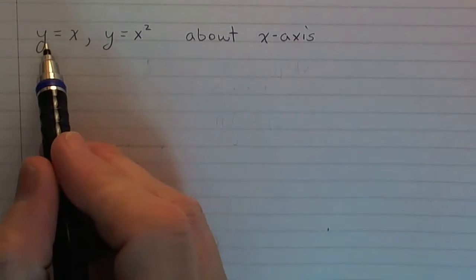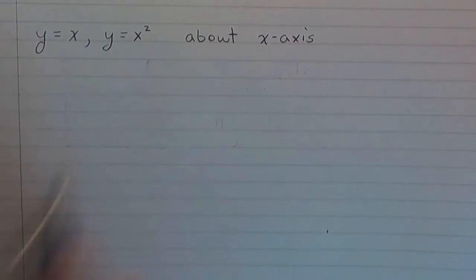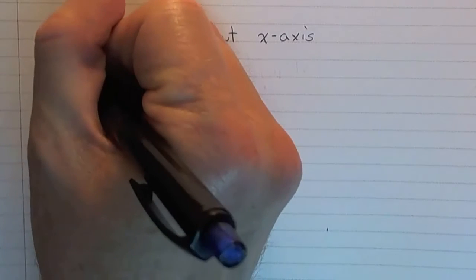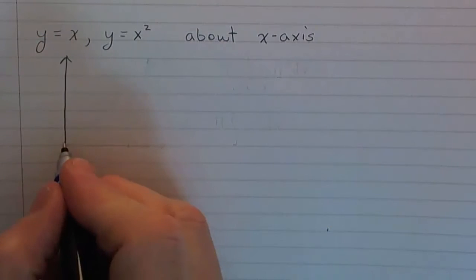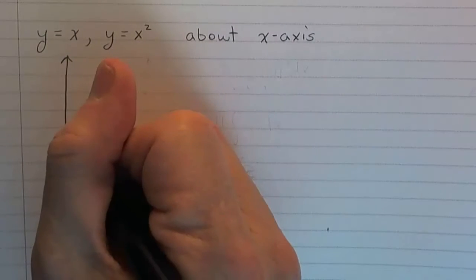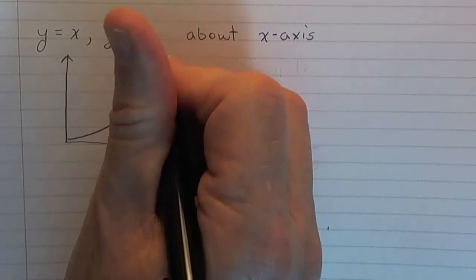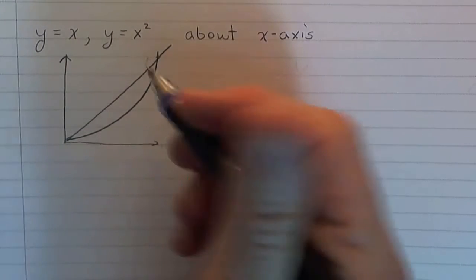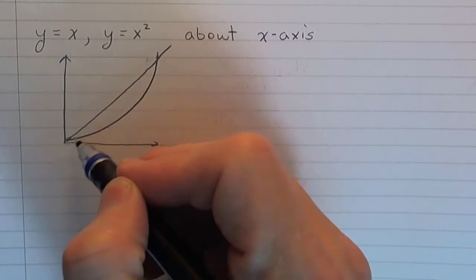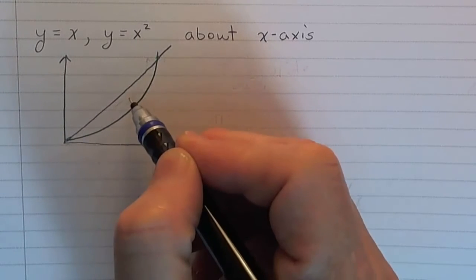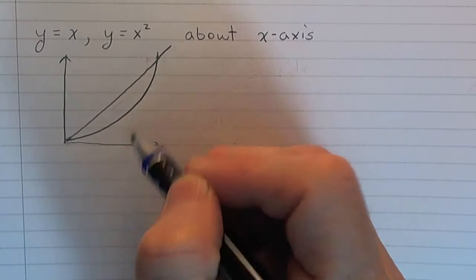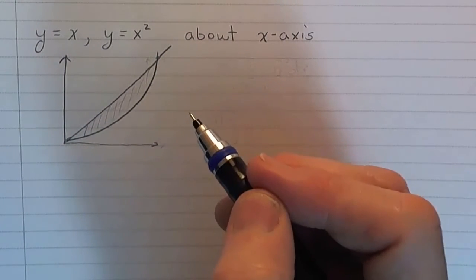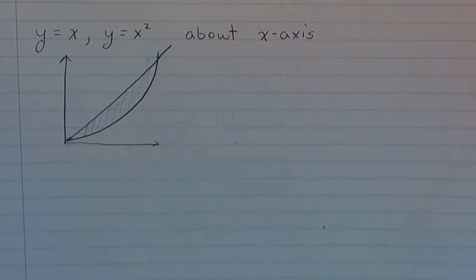Let's suppose that we have a region defined or bounded by y equals x and y equals x squared. Let me draw a picture of that. Here is x squared and then we have x, and let's suppose that we want to take this enclosed region and revolve it about the x-axis and figure out what the volume is for that solid formed.